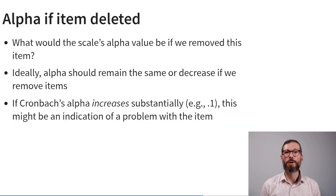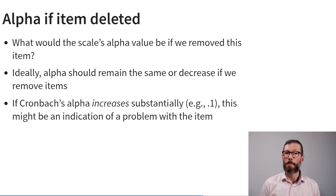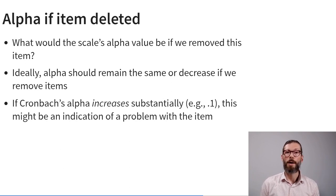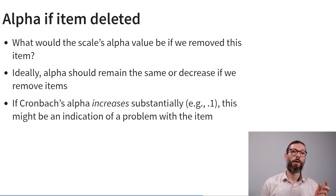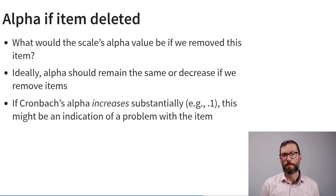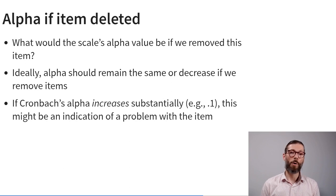Another useful concept is: how high would Cronbach's alpha be if we removed a specific item? Ideally, reliability should remain the same or even decrease when we remove items. But if alpha would increase substantially — for example, by 0.1 or more — upon deleting an item, that may indicate a problem with that specific item.